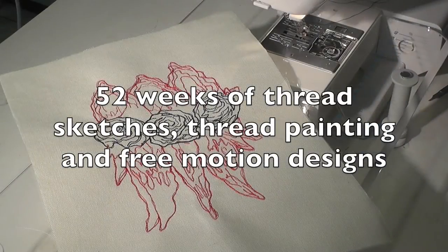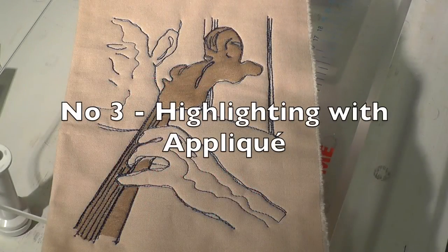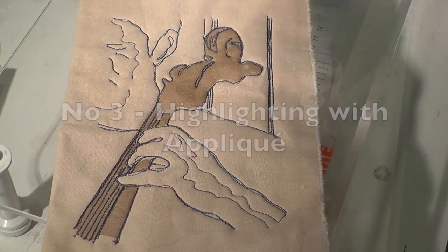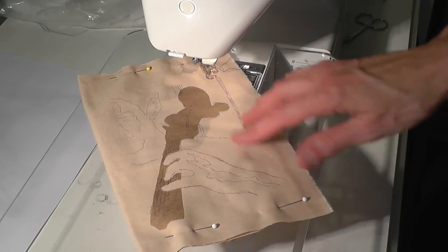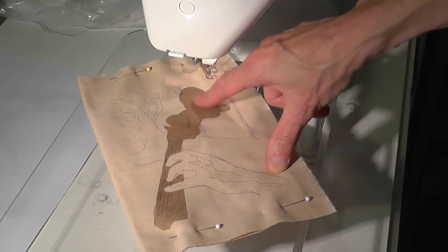This week I'm drawing with the machine, having begun by highlighting one element of the design with applique. To do this I first transferred the design onto the fabric and then cut and fused the shape of the cello neck into position.